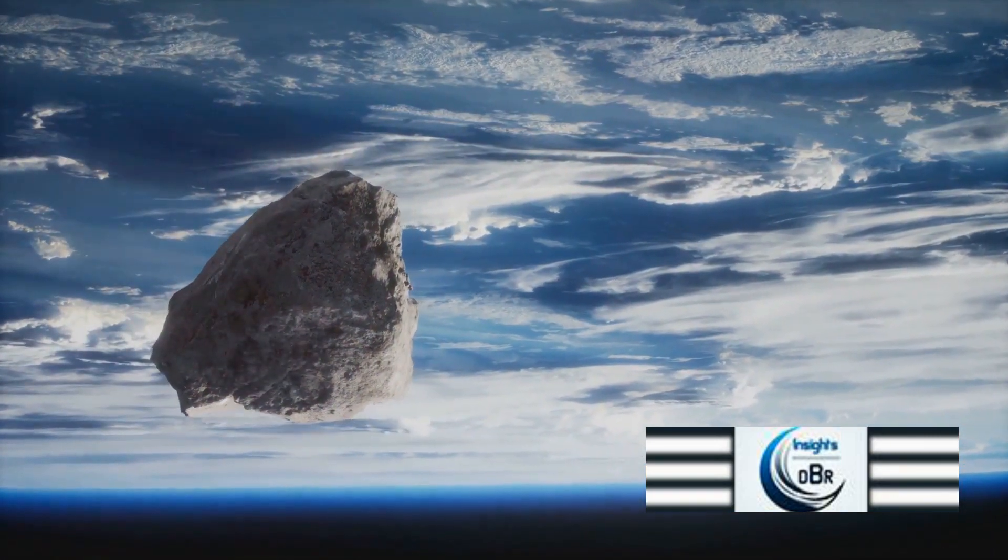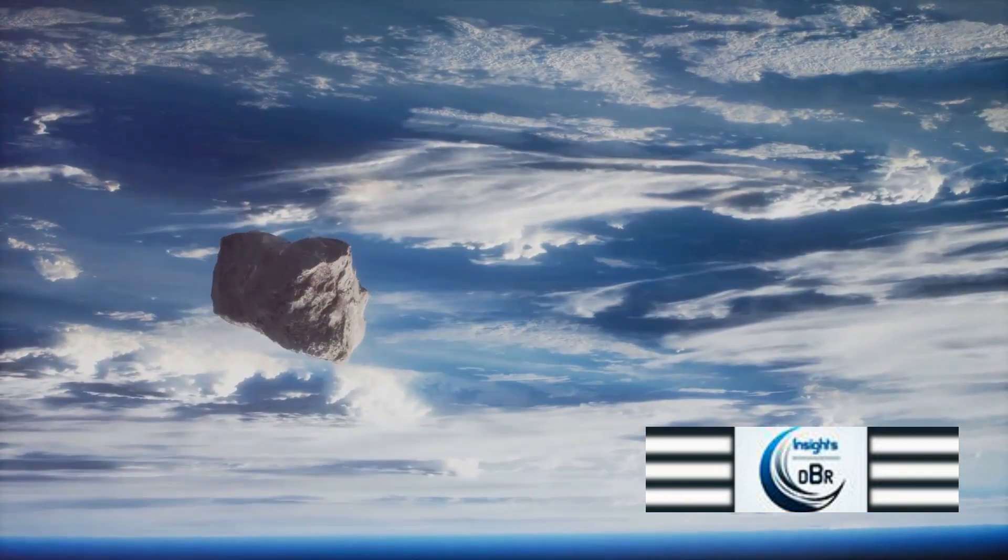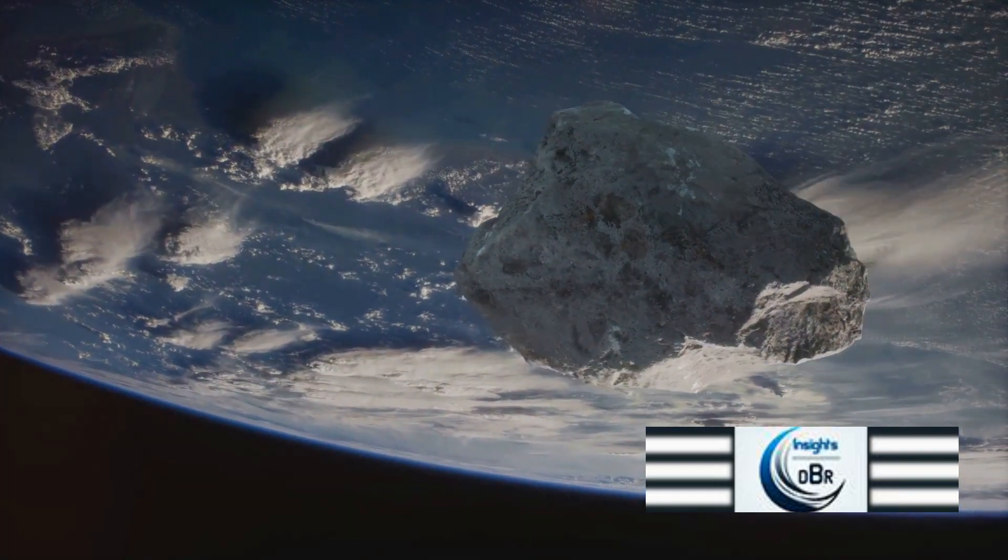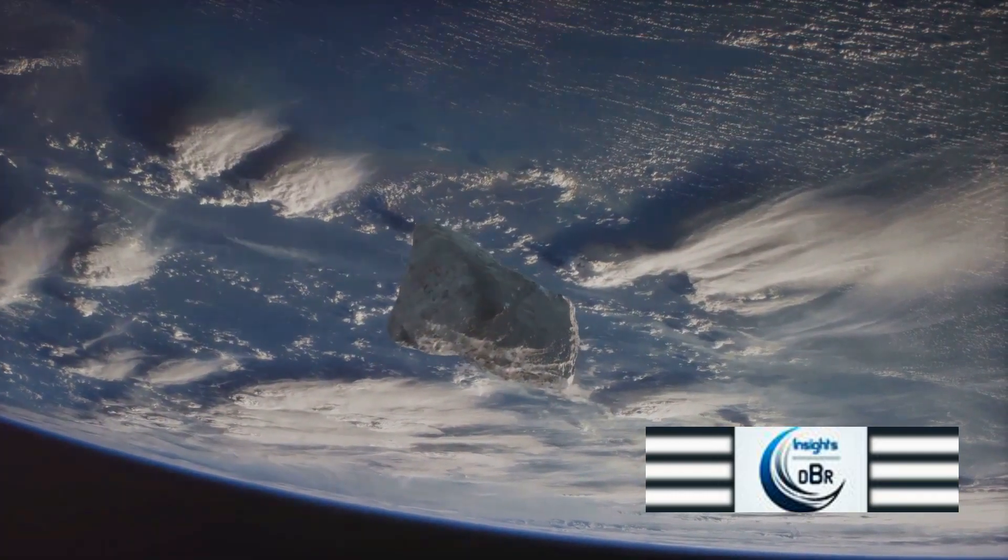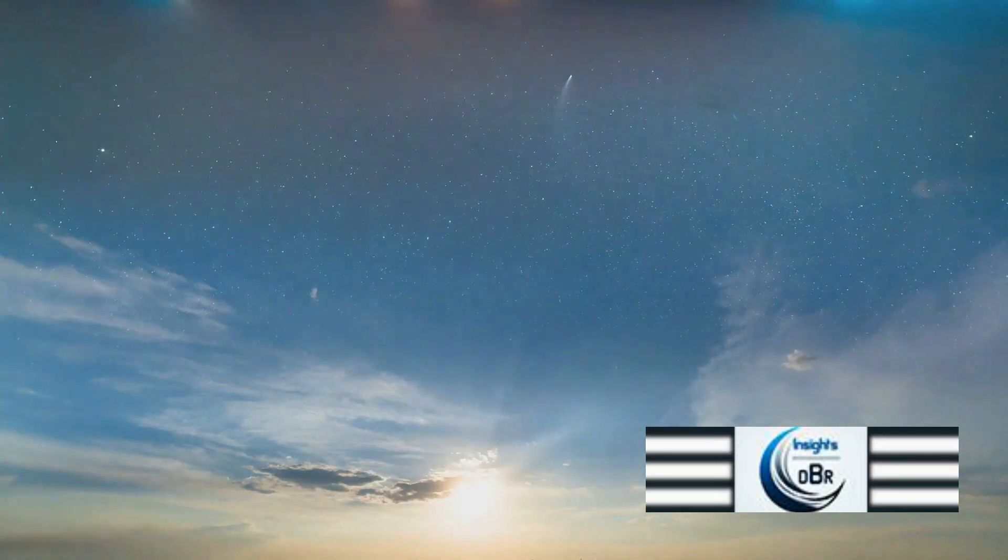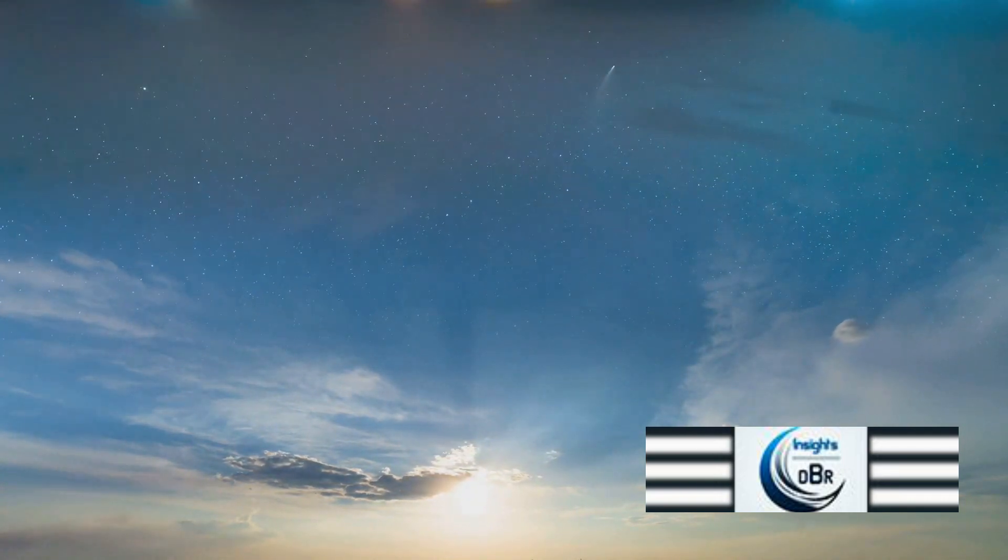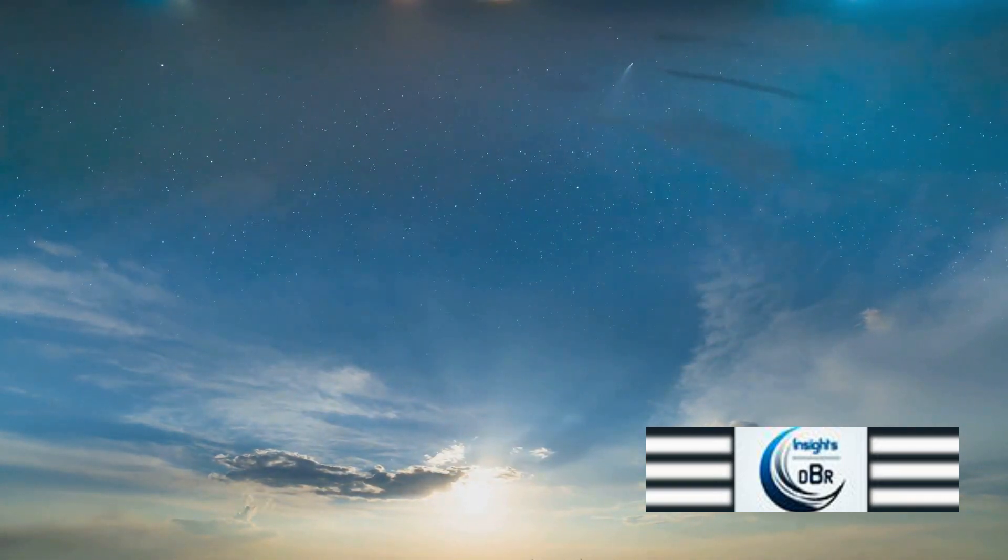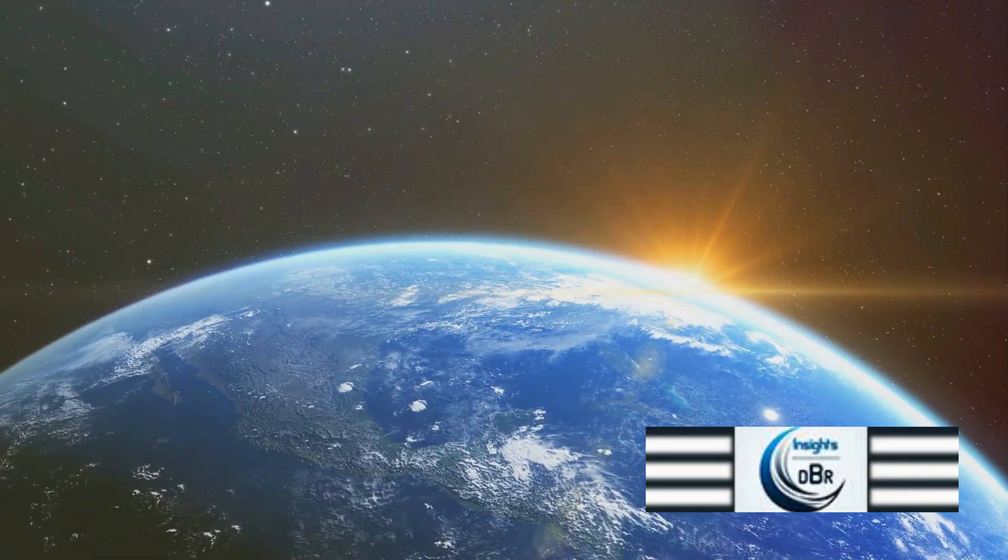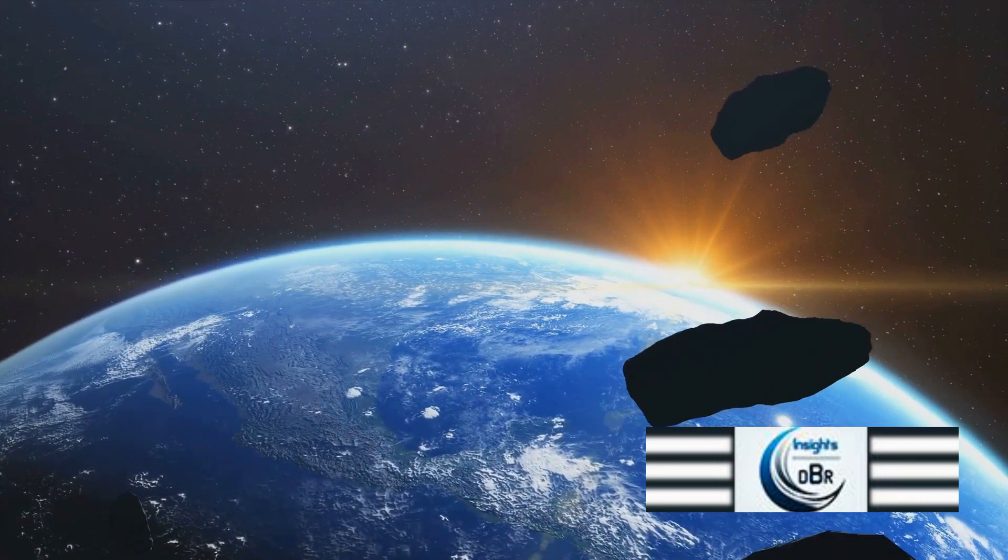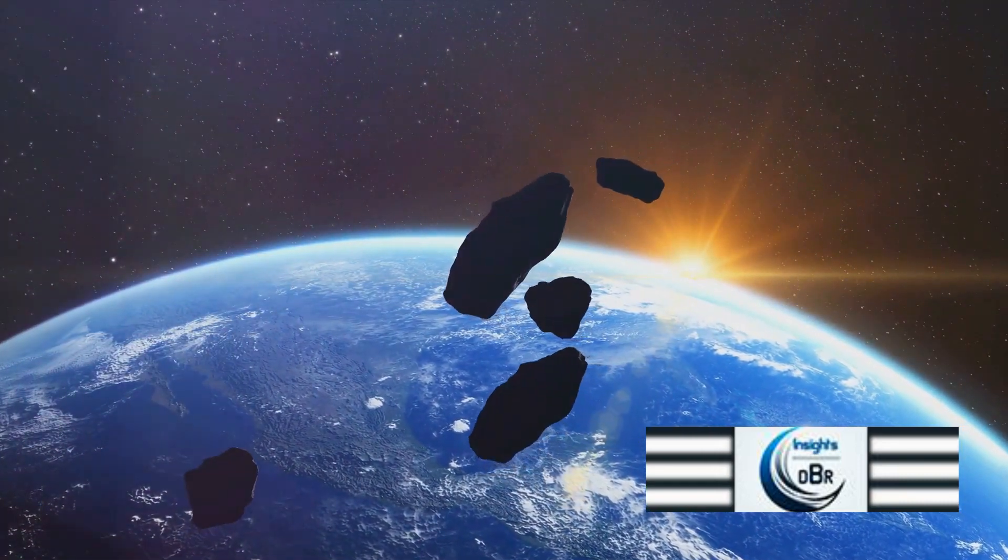Now as it nears our planet, something intriguing happens. The pull of Earth's gravity starts to accelerate our comet. It's like a downhill sprinter gaining speed with every step. The closer it gets, the faster it moves until it's hurtling towards us at an astonishing pace. During this stage, the comet starts to wake up. The sun's heat begins to vaporize the icy core, creating a glowing coma around the nucleus, and a tail that points away from the sun. This is the iconic image of a comet we're all familiar with. A celestial snowball turned cosmic fireball, hurtling through space with increasing speed and brilliance.